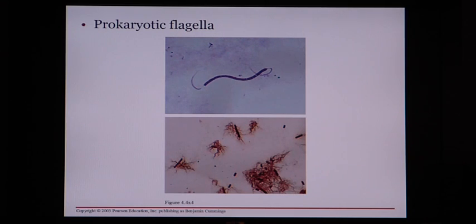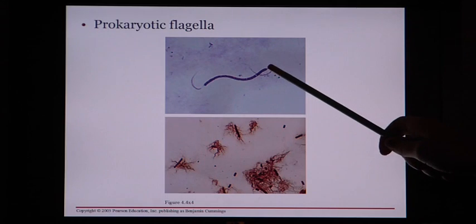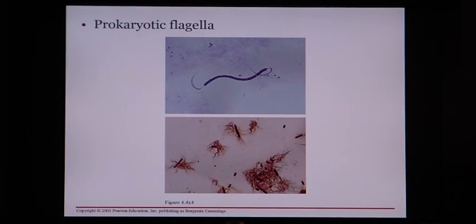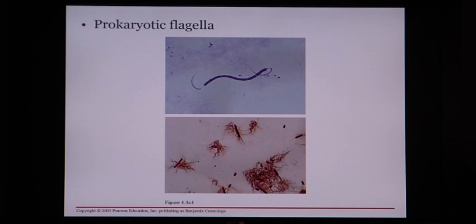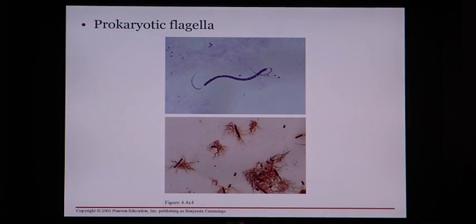Prokaryotic cells can also have little whip-like tails called flagella. Flagella are little tails — almost like tadpole tails — used for locomotion or movement. By using those flagella, bacteria can whip those tails and move through fluids. We've actually seen an example of a human cell that has a tail like this: a sperm. A sperm is a eukaryotic cell, not prokaryotic, but it does have a flagella just like bacteria.